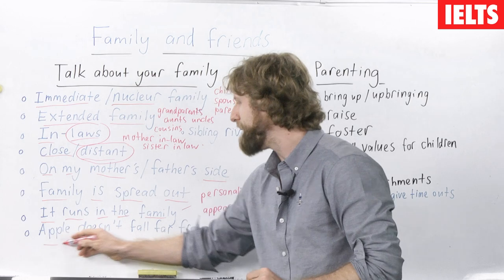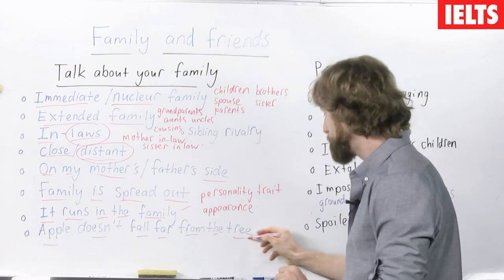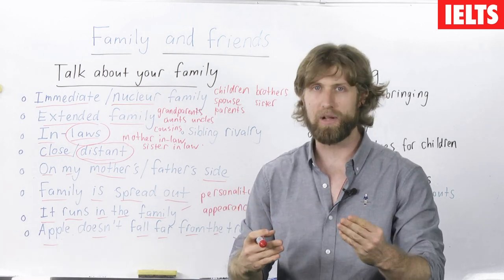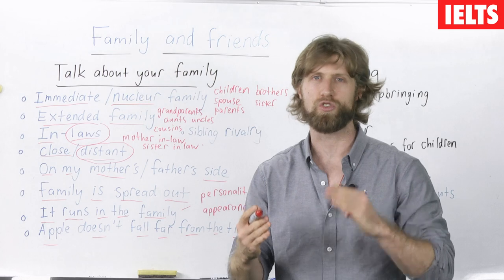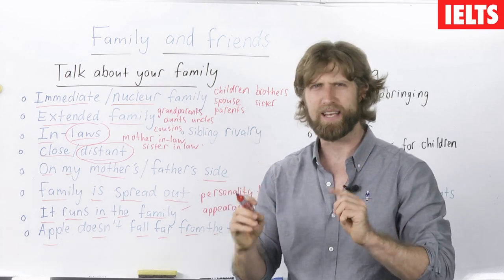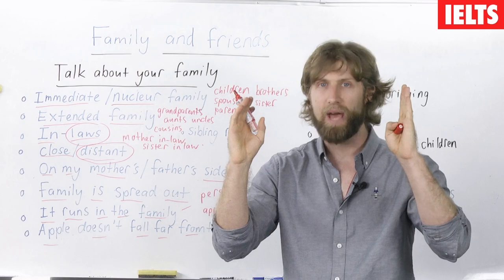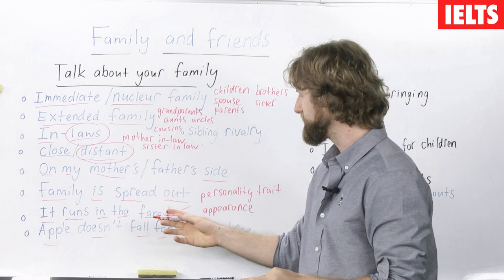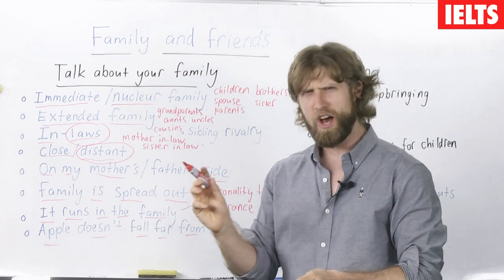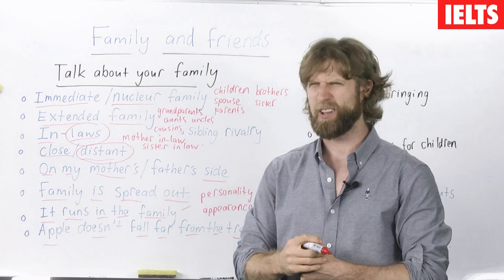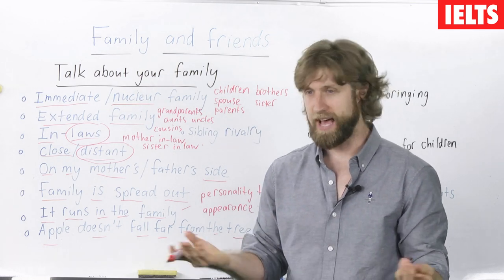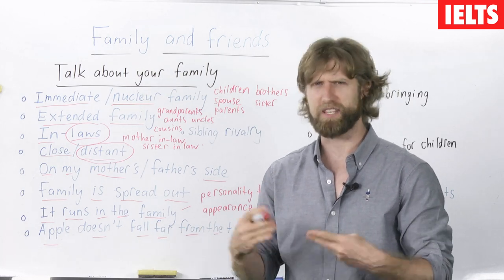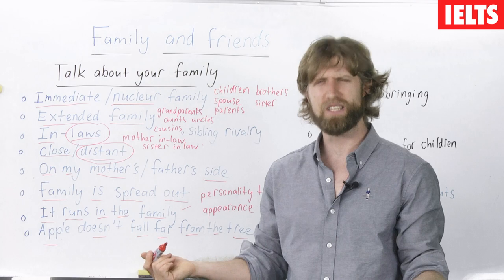The apple doesn't fall far from the tree. What that means is you are very similar to your mother or father. Think of it this way: the tree is the parent and the apple is the fruit of the tree. So you can say, when someone tells you your son is a lot like you, you respond: yes, the apple doesn't fall very far from the tree. We like the same food and have the same taste in music.